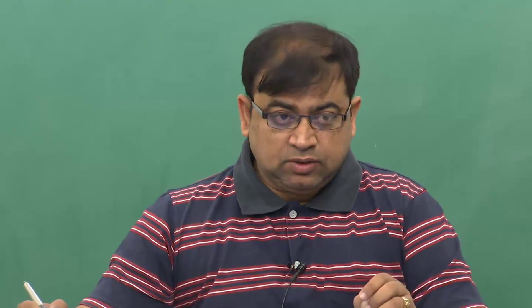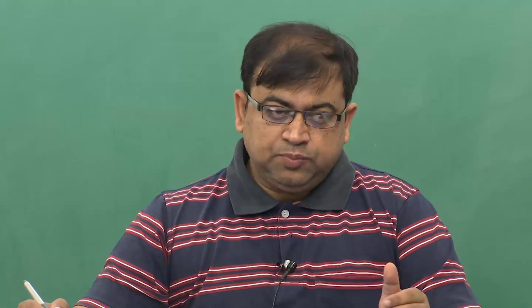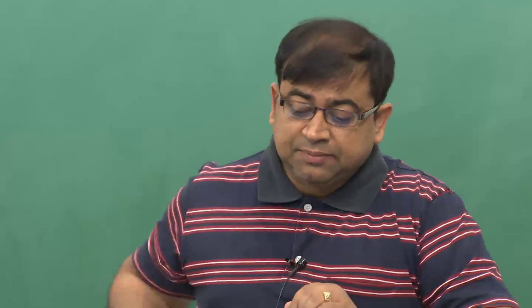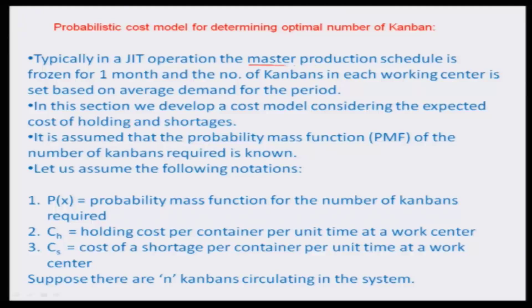Today, we will be looking into another aspect of lean manufacturing, which is about how to probabilistically estimate the overall level of Kanban with a cost per view, so that you have a cost in mind which you would like to optimize. Based on that, can you probabilistically predict the number of Kanbans or the Kanban levels circulating in a system? For doing that, typically in a JIT operation, the master production schedule is frozen for about a month and the number of Kanbans in each working center is based on the average demand of the period. In this section we will develop a cost model.